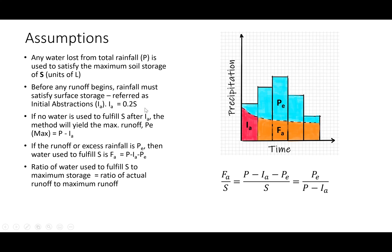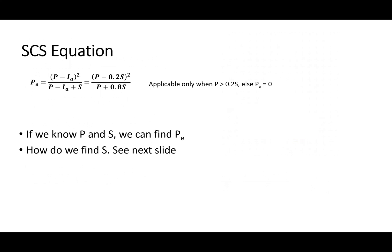This method assumes that the ratio of actual direct runoff PE over the maximum excess rainfall (P minus IA) is equal to the ratio of actual soil retention over maximum soil retention S. This is the main assumption of the method — that actual soil retention over maximum soil retention equals actual direct runoff over maximum direct runoff. When you simplify this expression you end up with the SCS equation for calculating excess rainfall or direct runoff if you know cumulative rainfall P.